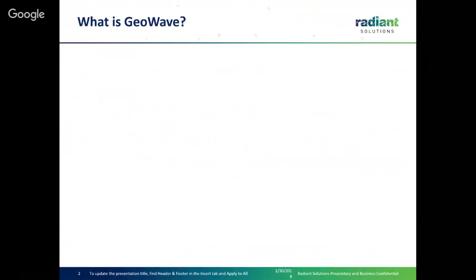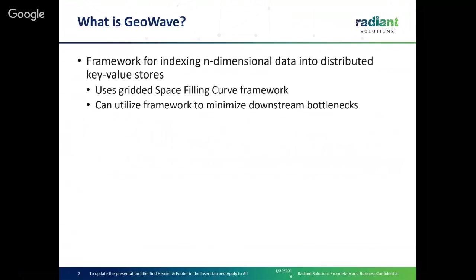So I'm going to start off basic: what is GeoWave? GeoWave is basically a framework for multidimensional indexing of data into a distributed computing cluster. For many years now, database frameworks like HBase, Accumulo, Cassandra, and DynamoDB have changed the game and allowed you to use distributed computing at massive scales. But there are some issues with that, especially with geospatial data, because it's actually multidimensional — you have latitude, longitude, a time component, elevation, and all these different things.